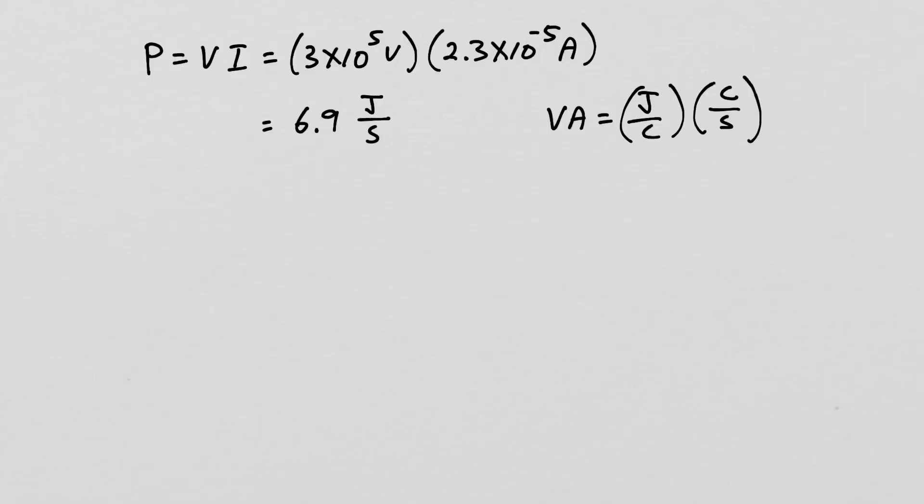The product of voltage times current is power. 300,000 volts times 23 microamps is a power of 6.9 joules per second. During the spark, the voltage will go from 300,000 volts to zero, so we really don't maintain this power for the full tenth of a second. But assuming the power is maintained at 6.9 joules per second for a tenth of a second, that would mean the spark would deliver an energy of 0.69 joules.